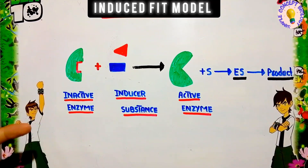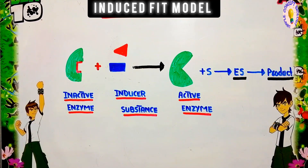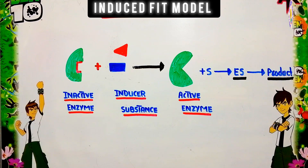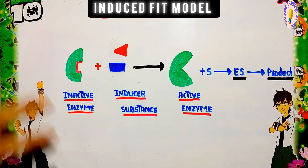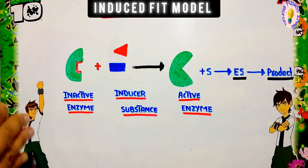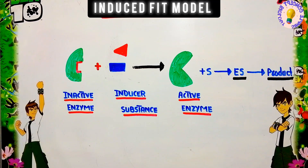In this video lecture, we will talk about the induced fit model as we discuss the mechanism of enzyme action. The mechanism of enzyme action is mainly explained by two models: the first one was proposed by Emil Fischer, which is the lock and key model, while the second one is the induced fit model. In the previous lecture we already discussed the lock and key model, so in this lecture we will mainly discuss the induced fit model.